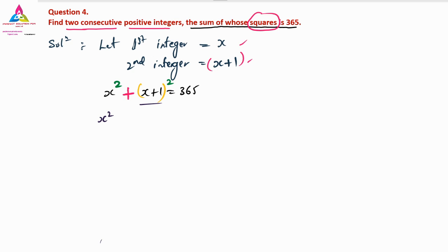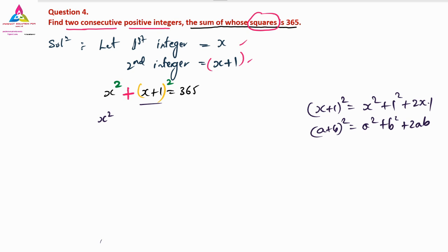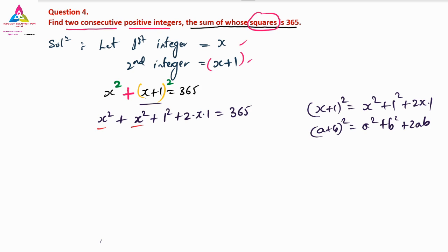Expanding (X plus 1) whole squared using the (a plus b) whole square formula: a squared plus b squared plus 2ab. So it becomes X squared plus 1 squared plus 2 into X into 1, which equals X squared plus 1 plus 2X. Adding the X squared terms: X squared plus X squared is 2X squared.